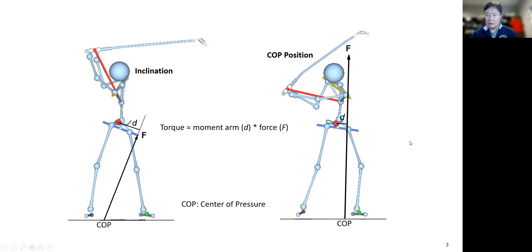During the downswing, when the lead arm becomes parallel to the ground for a right-handed golfer, the center pressure moves toward the mid-foot, close to the lead foot. The force is generally more vertical.